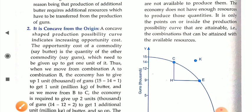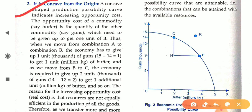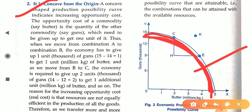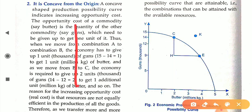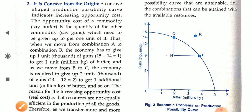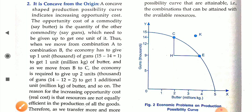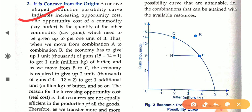The second characteristic is that the PPC is concave to the origin, as visible in the diagram where the curve makes a cave shape toward the origin. A concave-shaped PPC indicates increasing opportunity cost. Opportunity cost is the next best alternative use of a commodity — specifically, the quantity of one good (say, guns) that must be given up to produce one additional unit of the other good (say, butter).